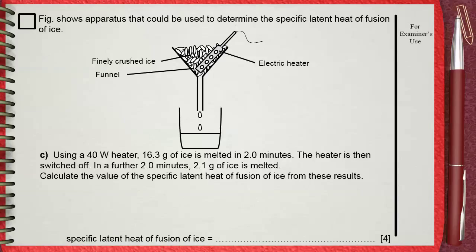Question C. Using a 40-watt heater, 16.3 grams of ice is melted in 2 minutes. The heater is then switched off. In a further 2 minutes, 2.1 grams of ice is melted. Calculate the value of the specific latent heat of fusion of ice from these results.